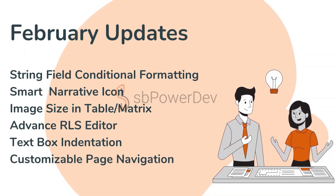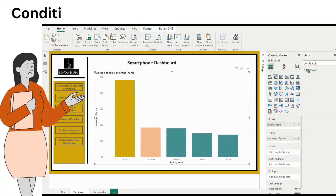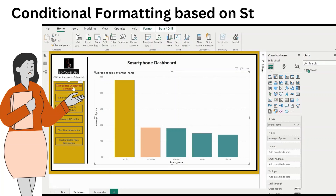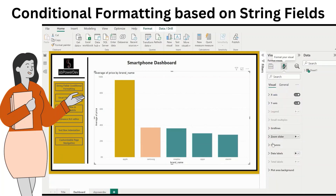First up, conditional formatting based on string fields. You can now set conditional formatting rules based on string fields — Microsoft announced this powerful new capability. You can access it in the same way as other conditional formatting, through the dialog which opens up from selecting an option in the formatting pane.